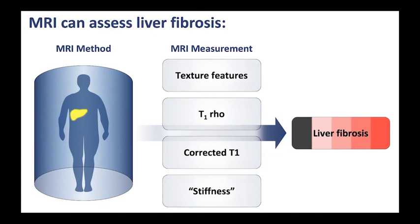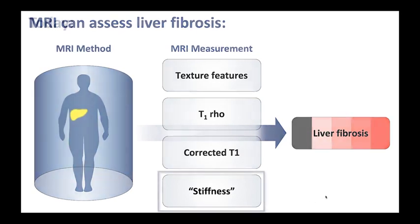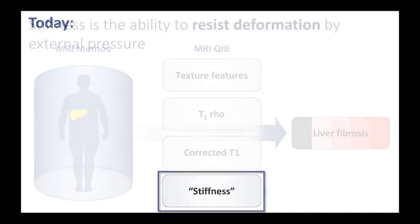MRI can assess liver fibrosis using various different methods — at least 10 methods have been attempted in the last 10 to 15 years in the literature, and four of them are shown here: texture features, T1ρ, corrected T1, and stiffness. In the interest of time today, I will focus on stiffness.